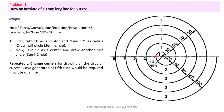After that, take point 2 as center with radius 2 to 1, and draw another semicircle. This completes 360 degrees — that means your one complete turn is now finished.